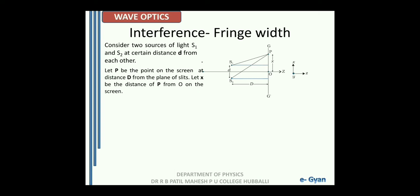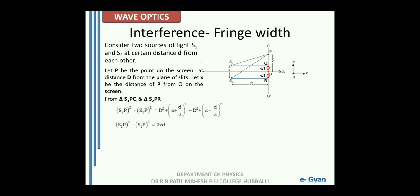Let us make a construction by drawing two horizontal lines from S1 to the screen and S2 to the screen. From triangles S1PQ and S2PR, using the Pythagoras theorem, we can write: S2P² minus S1P² equals d² plus (x + d/2)² minus [d² plus (x − d/2)²]. On simplification, S2P² minus S1P² can be written as (S2P − S1P)(S2P + S1P). Therefore, S2P − S1P equals 2xd divided by (S2P + S1P).